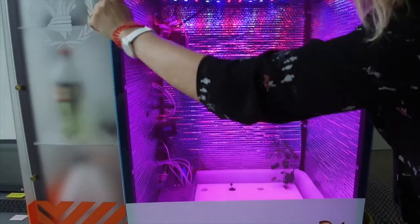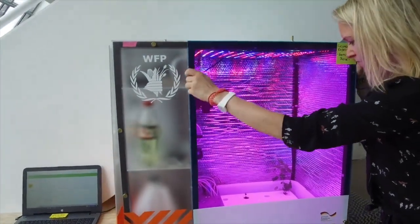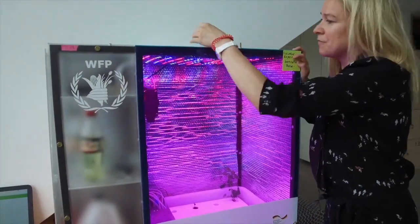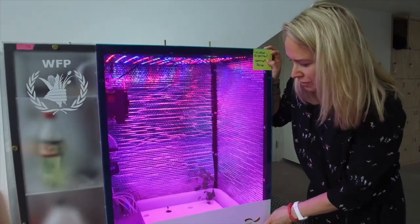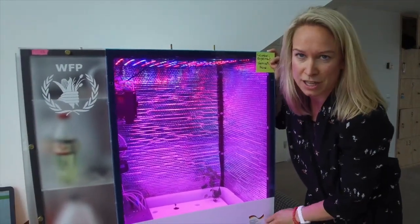In there we have a water basin where the plants are. Right now we're doing a cucumber recipe. So the plants you see are still very very small but we started them from seed. And the cool thing is we have one food computer here and eleven more in the Jordan country office.